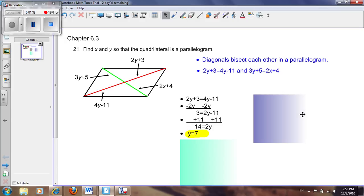The second equation we can now solve because we have the value of y. The equation reads 3y plus 5 equals 2x plus 4. Since we know y, we can plug it in: 3 times 7 plus 5 equals 2x plus 4.